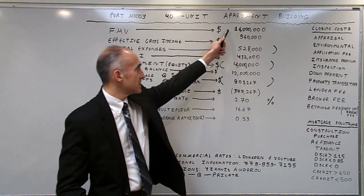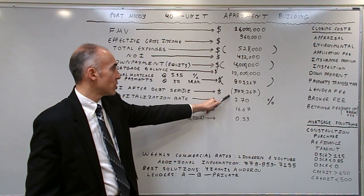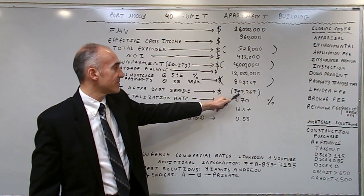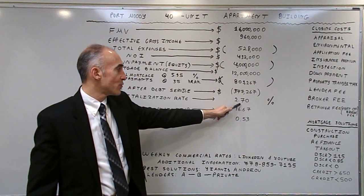The fair market value is 16 million, the mortgage amount is 12 million, the NOI after debt service is $377,267 negative, the capitalization rate 2.7%.